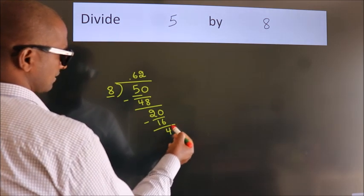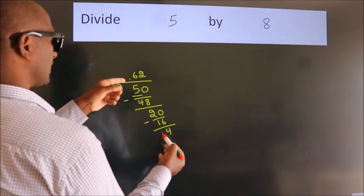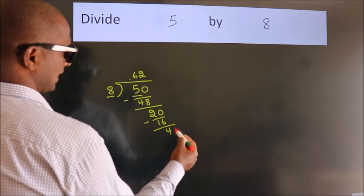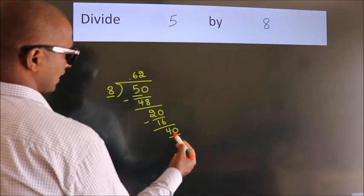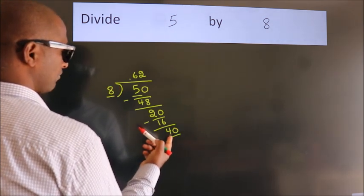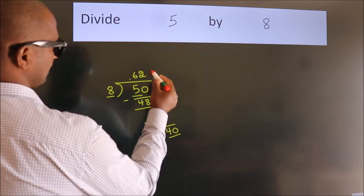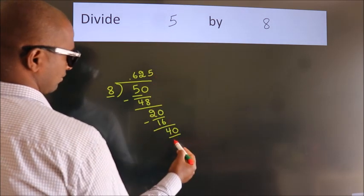After this, we already have the decimal, so directly take 0. So 40. When do we get 40 in the 8 table? 8 fives, 40.